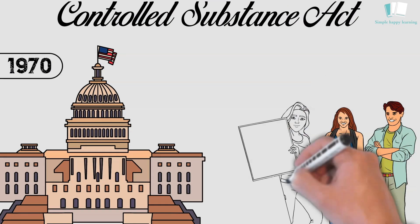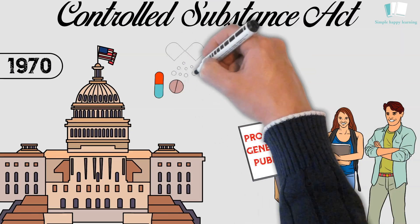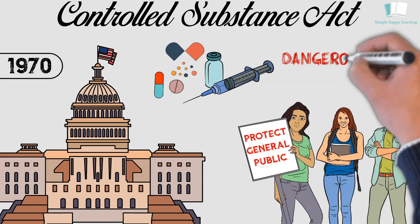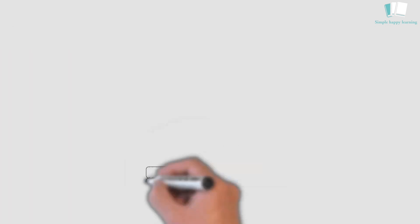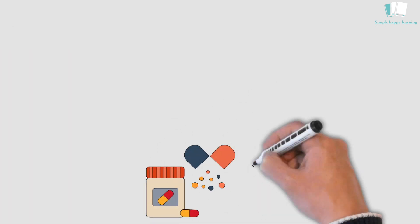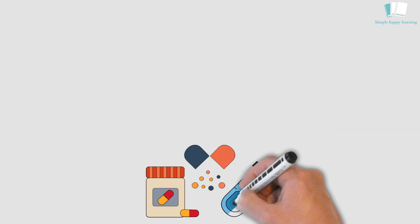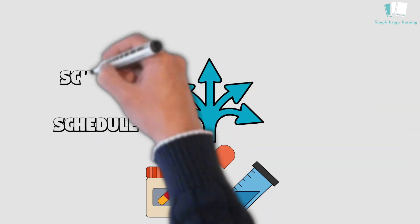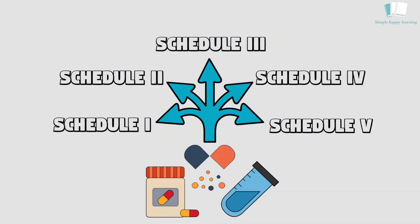Since 1970, the United States has maintained the Controlled Substance Act in an effort to protect the general public from potentially dangerous and addictive drugs. Drugs, substances, and certain chemicals used to make drugs are classified into five distinct categories or schedules, depending upon the drug's acceptable medical use and the drug's abuse or dependency potential.